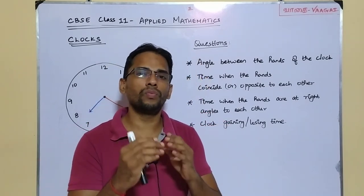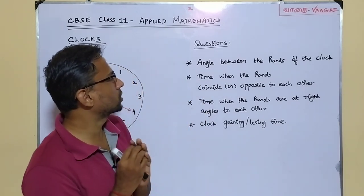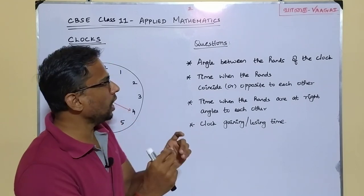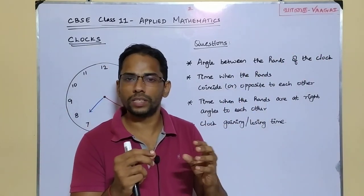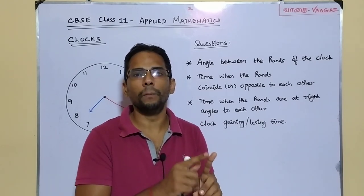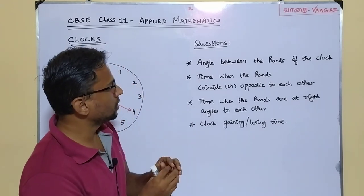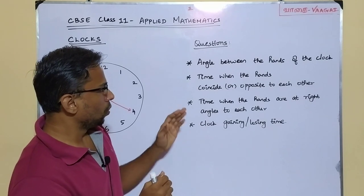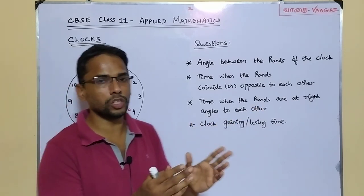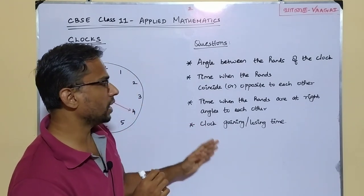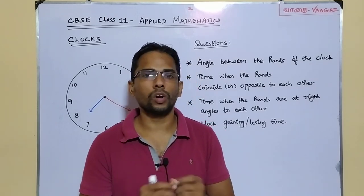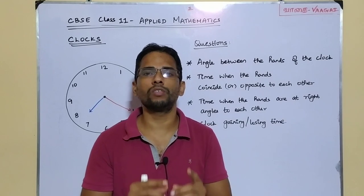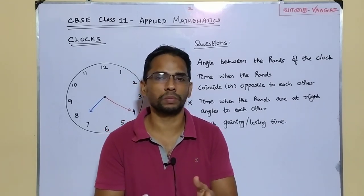Before that, let's have a view on what are all the frequently asked questions from clocks. The questions are: given a particular time, what is the angle between the hands of the clock? Next, what would be the time when the hands coincide or when the hands are opposite to each other? Next, what is the time when the hands are at right angles to each other? And next, the clock gaining or losing time. We are going to see all these concepts and problems here in this one video. Please watch till the end and subscribe to our channel.